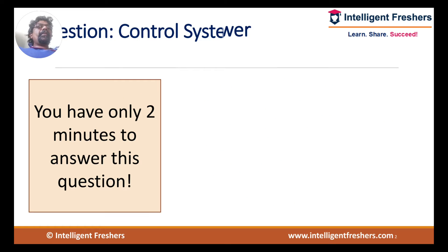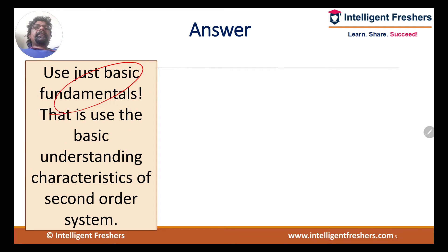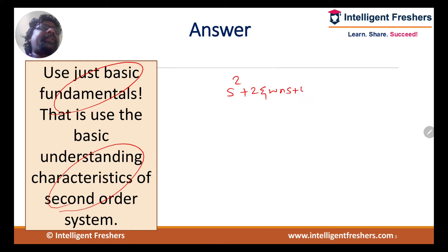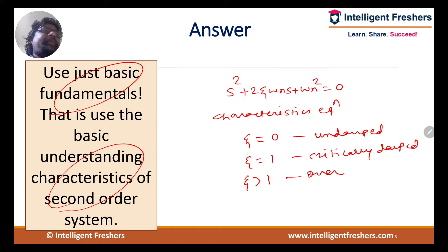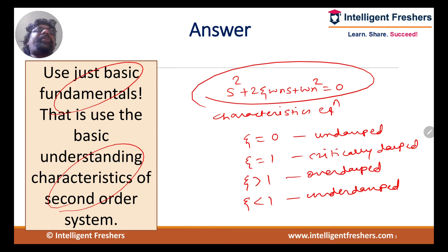To understand the fundamentals of characteristics of a second order control system, observe carefully. The standard characteristic equation is: s² + 2ζωₙs + ωₙ² = 0. The damping conditions are: ζ = 0 → undamped; ζ = 1 → critically damped; ζ > 1 → over damped; ζ < 1 → under damped.